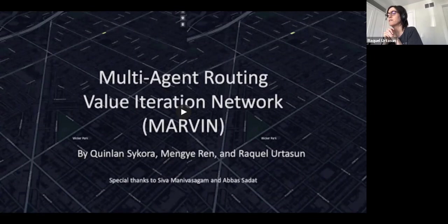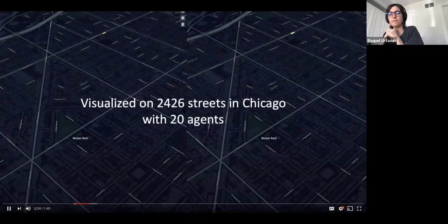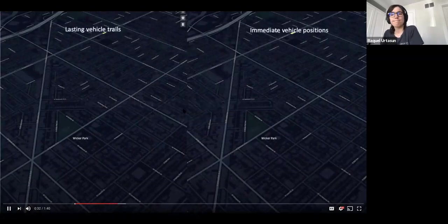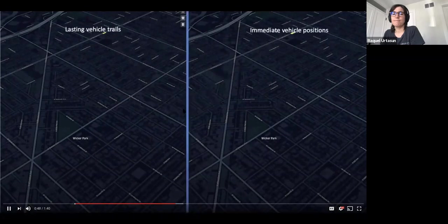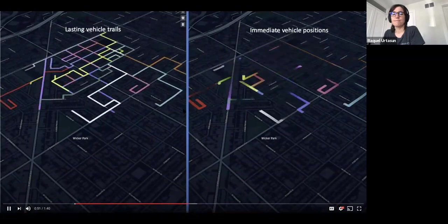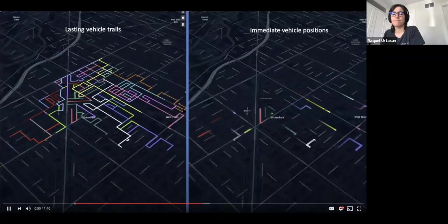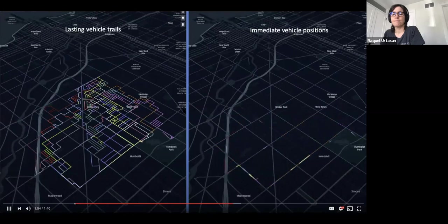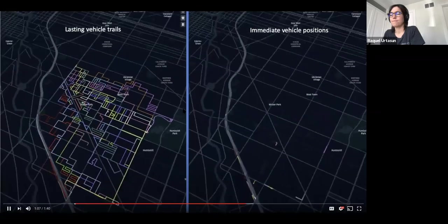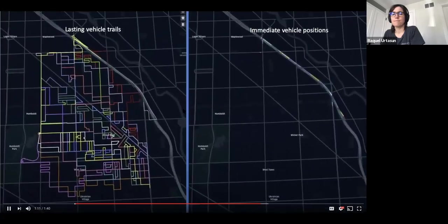Here is a final visualization of our multi-agent value iteration model at work. This work will be visualized on 2,426 streets in Chicago with a fleet of 20 agents. On the left, you see the lasting vehicle trails as they traverse the city, and on the right, their immediate positions. The bright dots at the top of the screen represent the ending and starting locations of the vehicles.